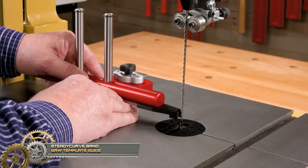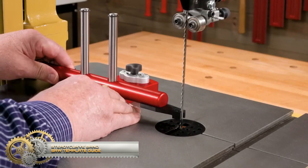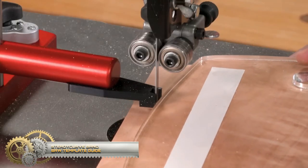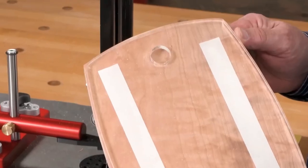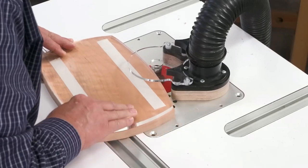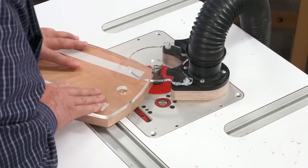Imagine a tool that physically guides you just outside the lines when band-sawing contoured projects, leaving just the right amount for your router to clean up. No need to imagine anymore. That tool is here. That tool is Woodpecker's new Steady Curve.